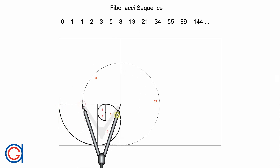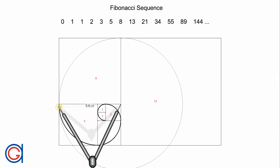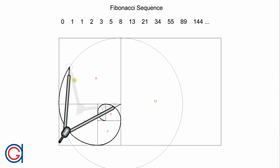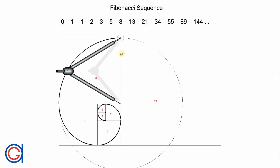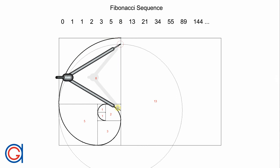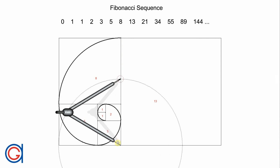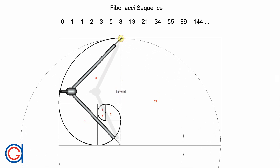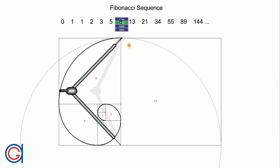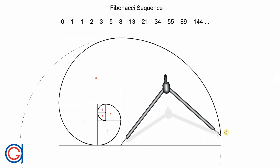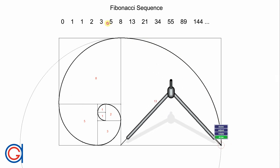So now continuing, setting our compass to eight centimeters in line with the end of the previous arc, we continue drawing the Fibonacci spiral, as can be seen here — you can see it's starting to take shape. And finally, setting the compass to 13 centimeters, we draw the last arc of this spiral that we're drawing today.